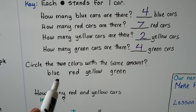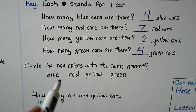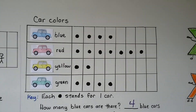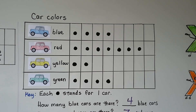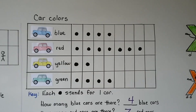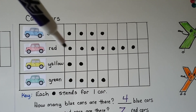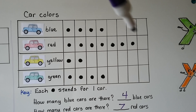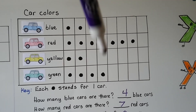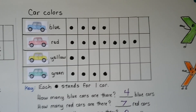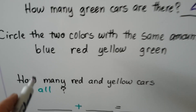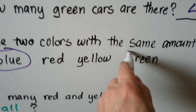Circle the two colors with the same amount. Can we look at the picture graph and quickly tell which two colors have the same amount? The yellow one only has two and the red one is way out over here. But if you look at the blue and the green, they line up — they both have four. So it's blue and green.